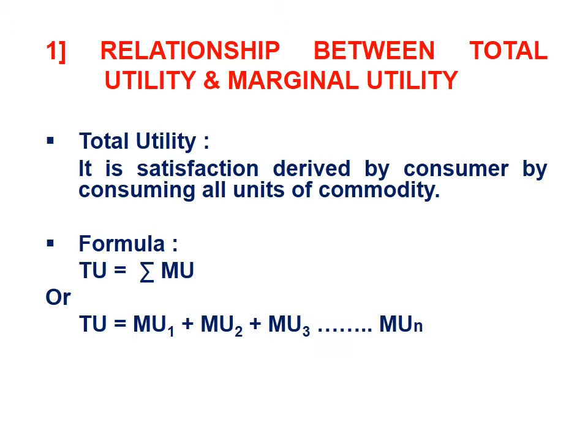Now let us see how to obtain the value of total utility. The formula of total utility is: TU = ΣMU, where sigma stands for summation. So the summation of all marginal utilities gives us the value of total utility. In another way: TU = MU1 + MU2 + MU3 up to MUn.